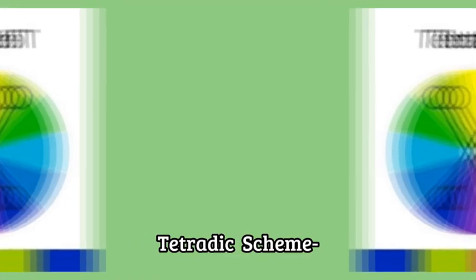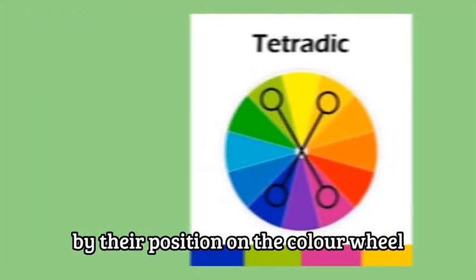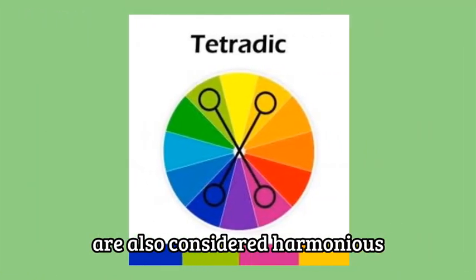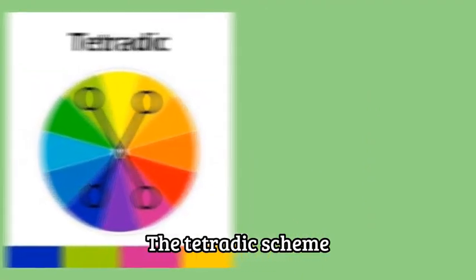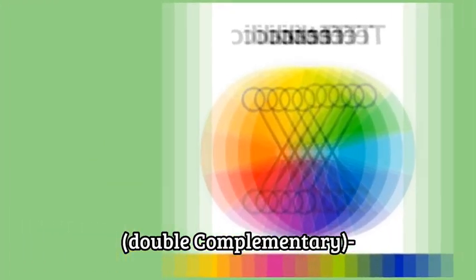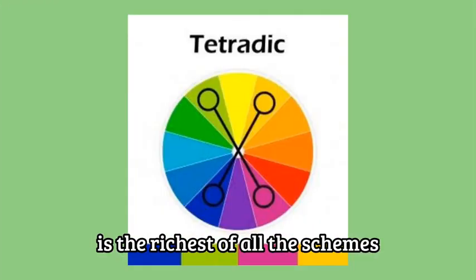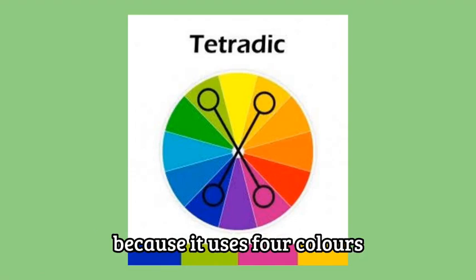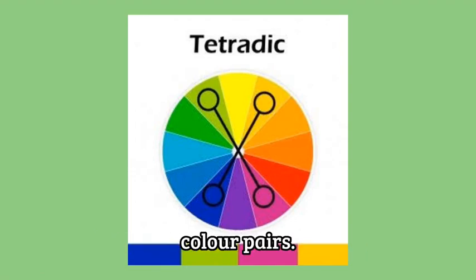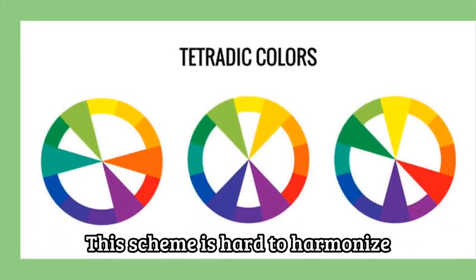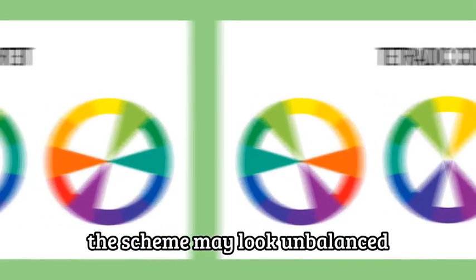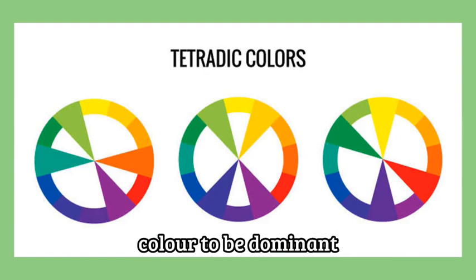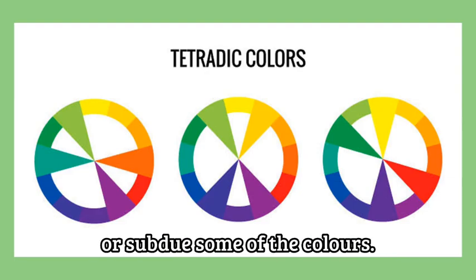Four colors that form a square by their position on the color wheel are also considered harmonious and may be part of a color theme too. The tetradic scheme, also called double complementary, is the richest of all the schemes because it uses four colors arranged into two complementary color pairs. This scheme is hard to harmonize; if all four colors are used in equal amounts, the scheme may look unbalanced, so you should choose a color to be dominant or subdue some of the colors.